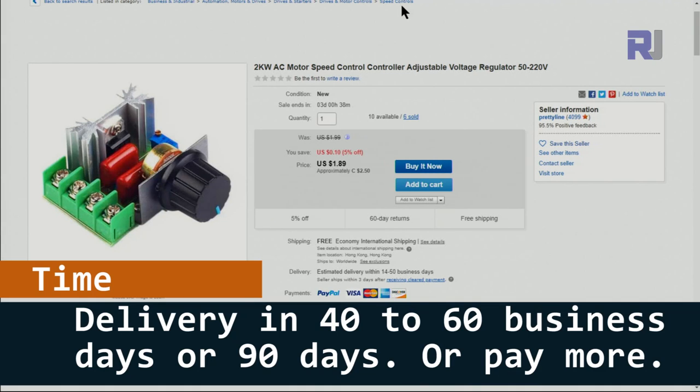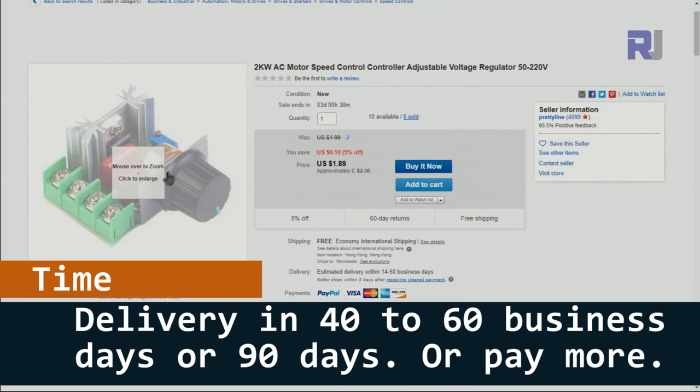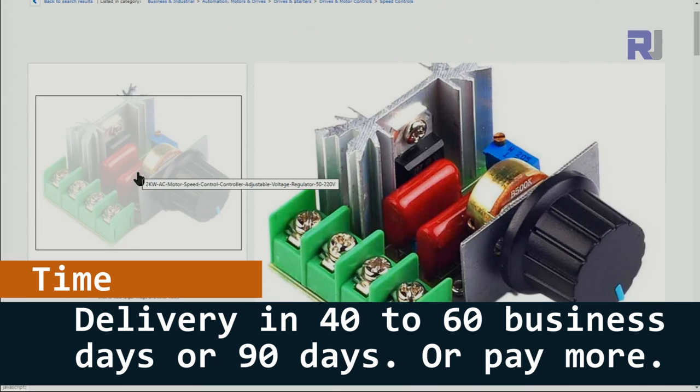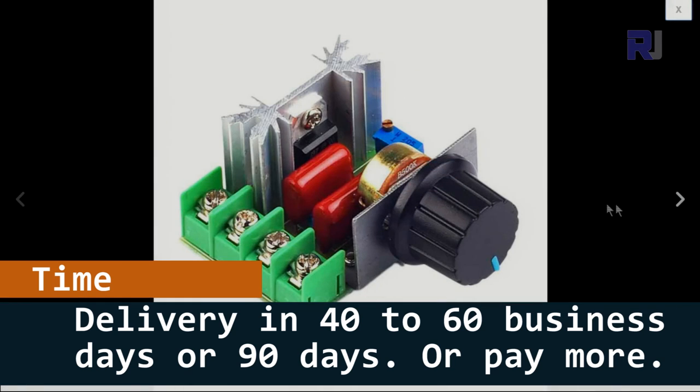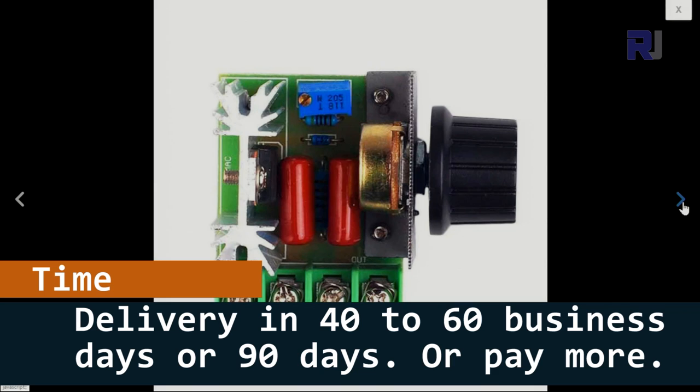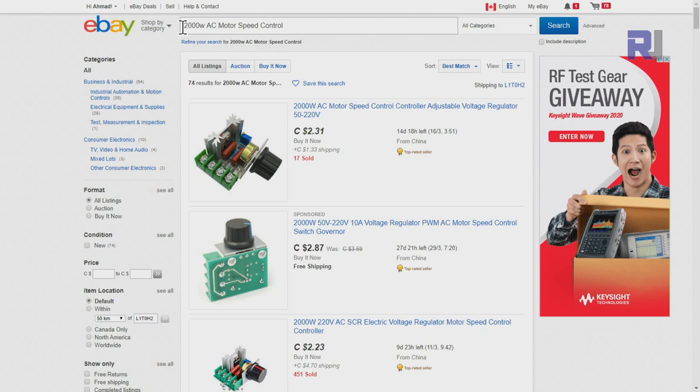I purchased this from eBay for $8.89, and depending on where you get it from, you might pay different prices. This has been labeled as 2 kilowatt, and you can search for 2000 watt AC motor speed controller.